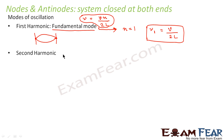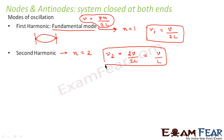Then comes the second harmonic, which corresponds to n=2. In this case, the frequency is denoted by ν₂ = 2v/2L = v/L. Diagrammatically, the two fixed ends form nodes and the pattern looks like two loops. There are a total of three nodes and two antinodes — compared to the first harmonic which had two nodes and one antinode. So this is the second harmonic.